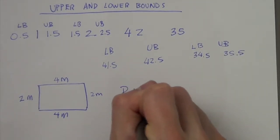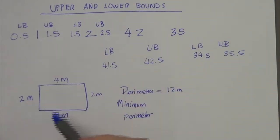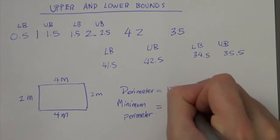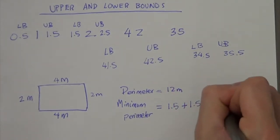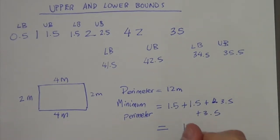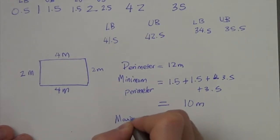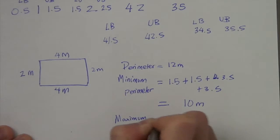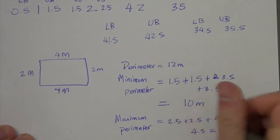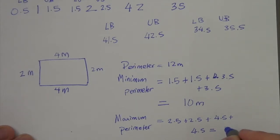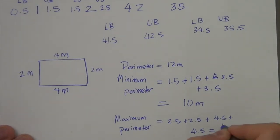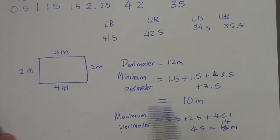To find the minimum perimeter, we use the lower bounds of 2 meters and 4 meters. That's 1.5 + 1.5 + 3.5 + 3.5 = 3 + 7 = 10 meters. For the maximum perimeter, we use upper bounds: 2.5 + 2.5 + 4.5 + 4.5 = 5 + 9 = 14 meters.